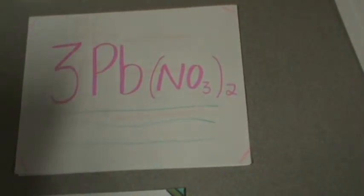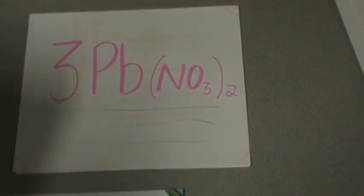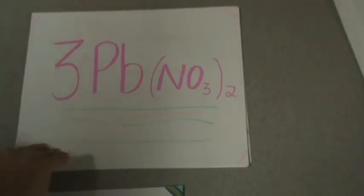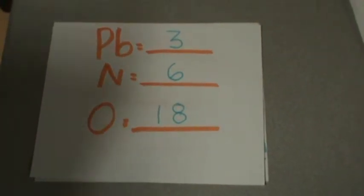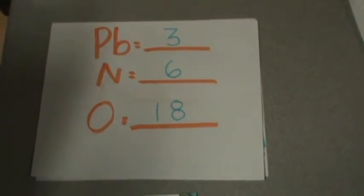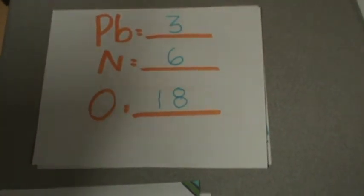So now I'm going to use lead nitrate as an example. Pb is lead which is 3 because it wasn't inside a bracket and there was a coefficient. N is 6 because 1 times 2 equals 2 times the coefficient which equals 6. Oxygen is 18 because 3 times 2 equals 6 times the 3 which equals 18.